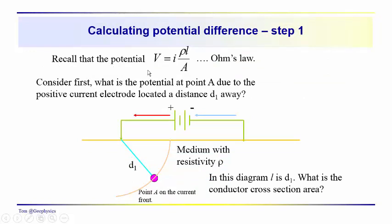Starting off with Ohm's Law, we look at the potential at point A relative to the positive current electrode. It is located a distance D1 away in a medium with resistivity rho. In this expression, L is equal to D1 — it's just the path length over which current has flowed. Now, consider what the conductor cross-sectional area is.